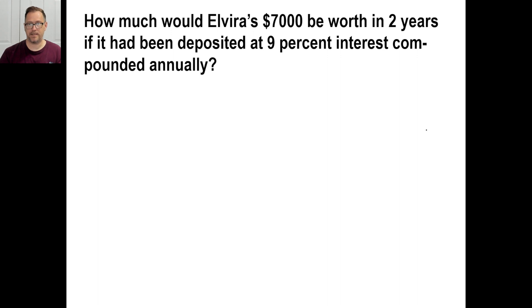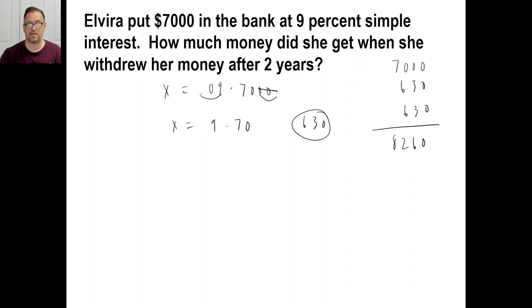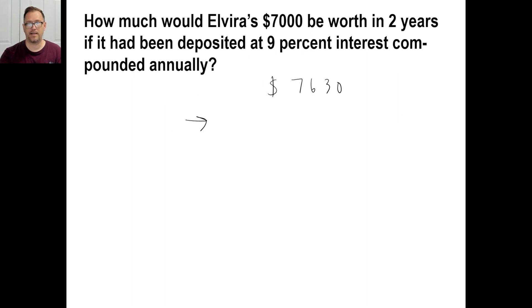Okay. Well, the difference in B is at the end of one year, we know she's going to have $7,630 at the end of one year. Right? Now at the end of the second year, since it's compounded, we're not calculating 9% interest on 7,000 still. We're calculating 9% interest on that much. So we would multiply this by 1.09. And I would, at this point, I would, if I were you, go ahead and just do the arithmetic and make sure it's correct. Let's check it.